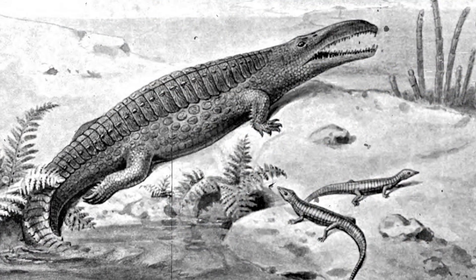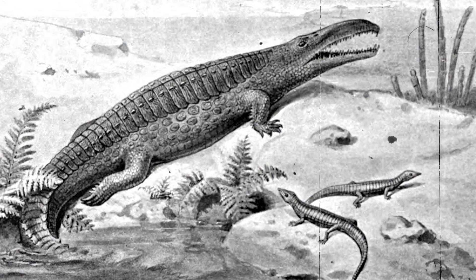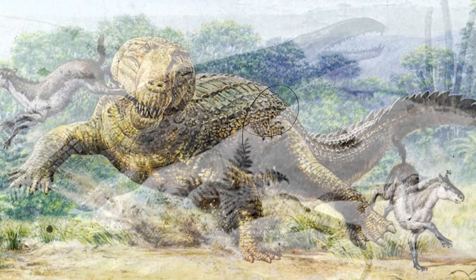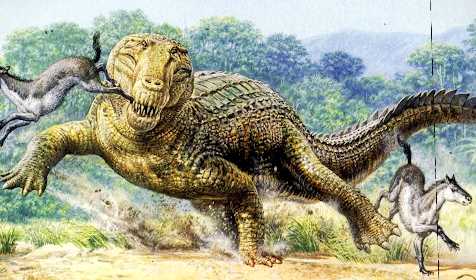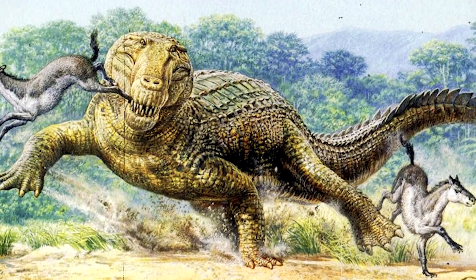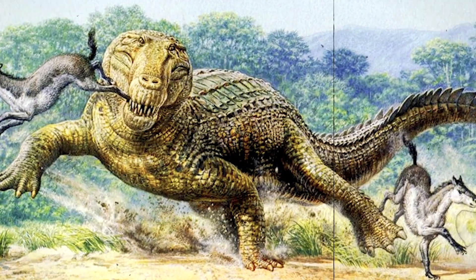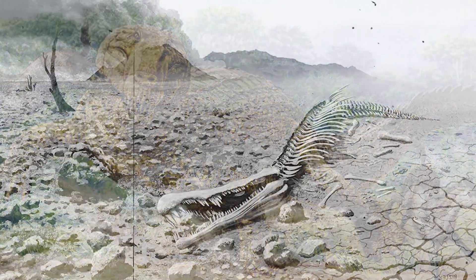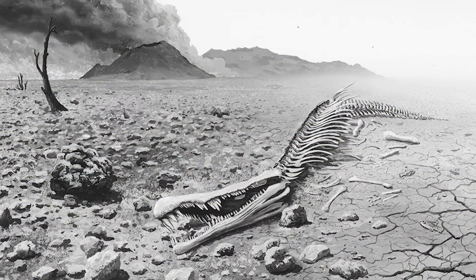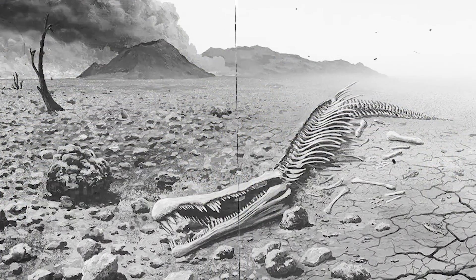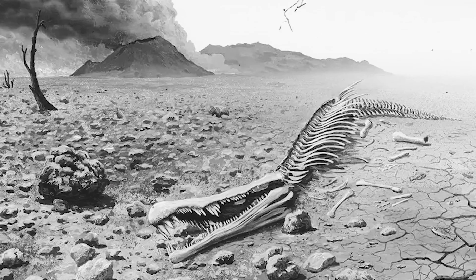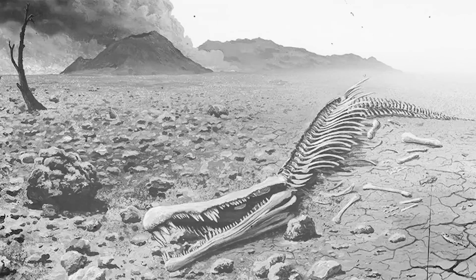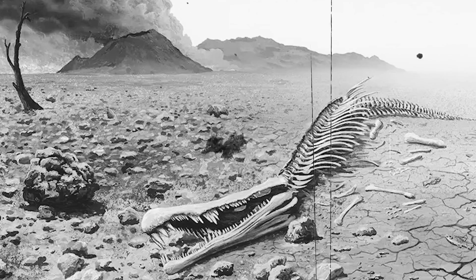While the crocodiliform lineage extends back over 200 million years to the late Triassic, modern forms did not appear on the scene until the Cretaceous — around 145 million years ago. Fossil evidence suggests that these modern crocodilians first appeared in what would become known as Europe, and from there they spread to the Americas and beyond.